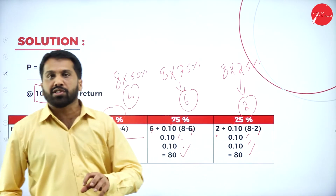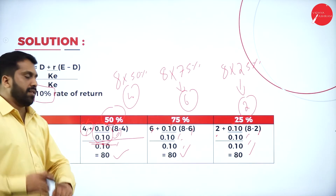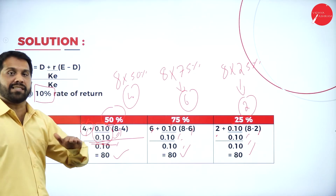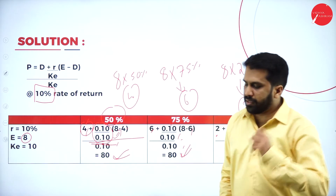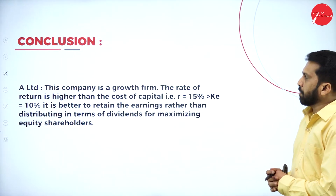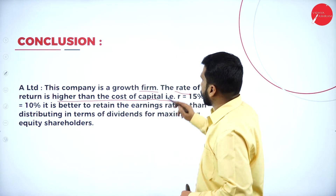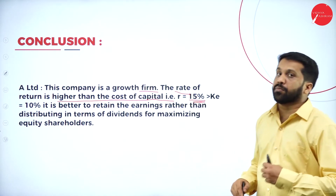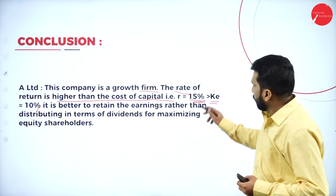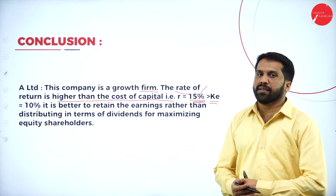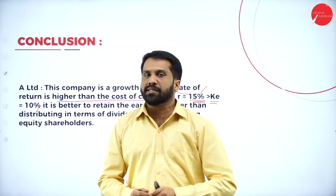Remember, if your cost of equity and your return are both the same, your answer will be common for all payout ratios. This company with 15% return is a growth firm — the rate of return is higher than the cost of capital of 10%. In an examination, the conclusion is not required; only the problem calculation is needed.